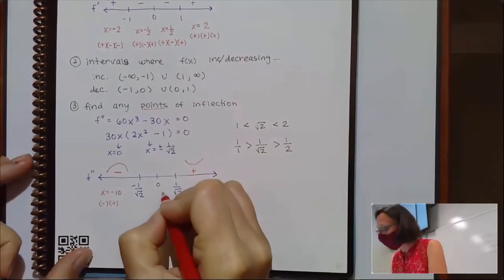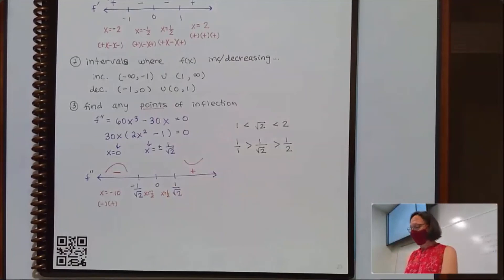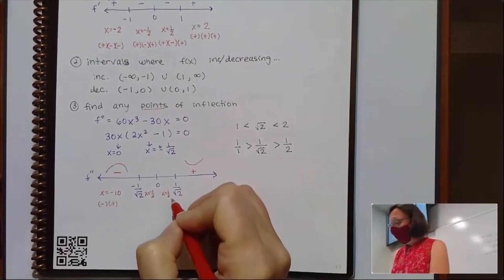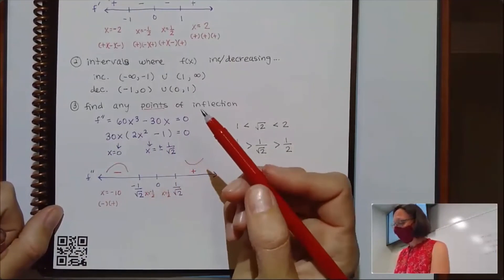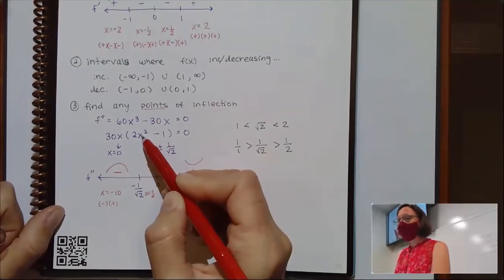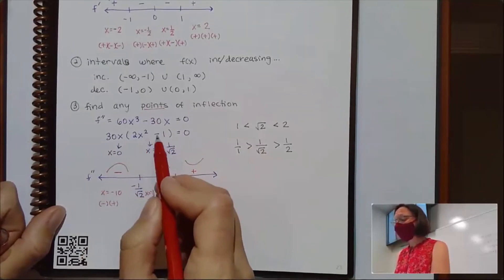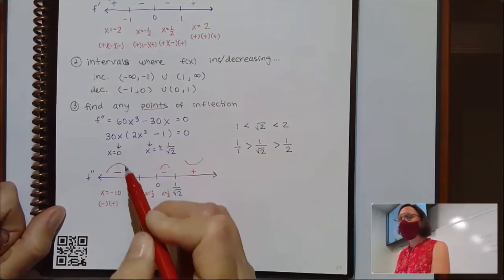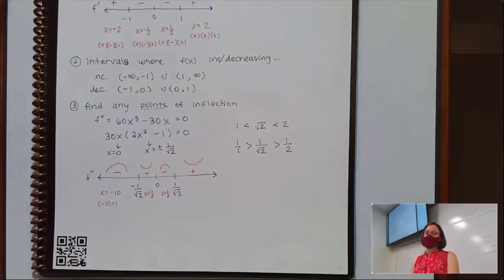If I plug in a half, this thing out front is going to be positive. Inside, I've got 1/2 squared, which is 1/4. 2 times a fourth is a half, minus 1, that's negative. If I plug in negative 1/2, I'm going to get exactly the same thing inside. It's just going to be a negative out in front also. So I'll have a negative times a negative, and this will be positive. So if I'm looking for points of inflection, it looks like I've got three of them on this graph.